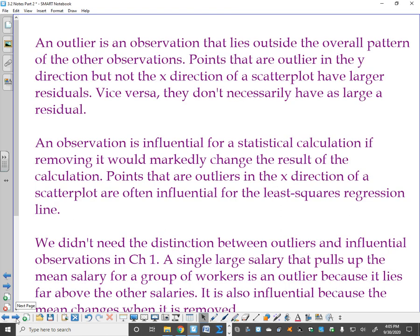An outlier is an observation that lies outside the overall pattern of the other observations. So, we looked at two outliers, child 18 and child 19. Points that are an outlier in the y-direction, but not the x-direction. That was kid 19, the one that was up. Have larger residuals. Vice versa, they don't necessarily have as large a residual. So, the vice versa is, if I have a horizontal outlier, they don't necessarily have a huge residual. However, an observation is influential for a statistical calculation if removing it would markedly change the result of the calculation. Points that are outliers in the x-direction, horizontal, of a scatterplot are often influential for a least squares regression line. In other words, that horizontal outlier is going to change your slope and change your y-intercept the most. It is the most influential.